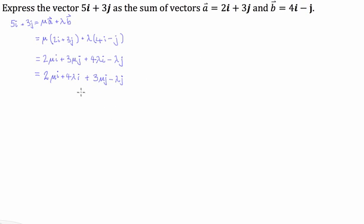What we're going to do now is factorise the front two by i and factorise the back two by j. So we're going to be left with 2 mu plus 4 lambda times i, add 3 mu minus lambda times j. And this has to equal 5i plus 3j.